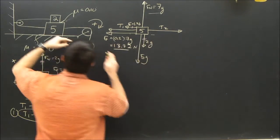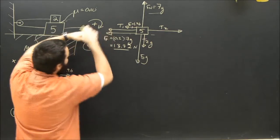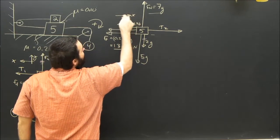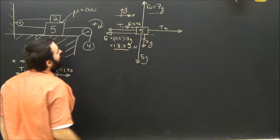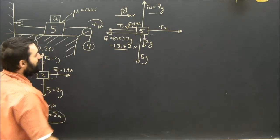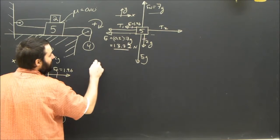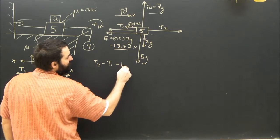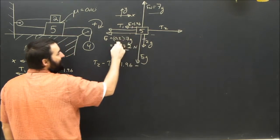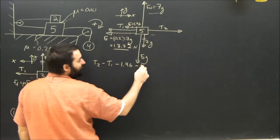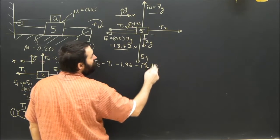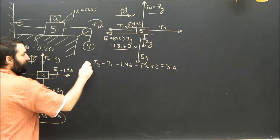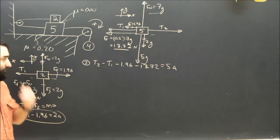Positive x on the five kilogram object is to the right. So the equation is: T2 − T1 − 1.96 − 13.72 = 5a. That's equation two.